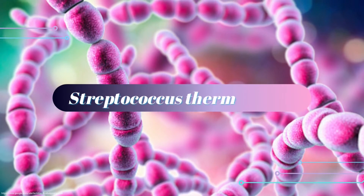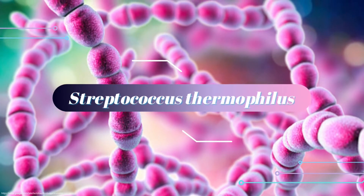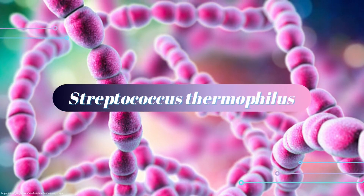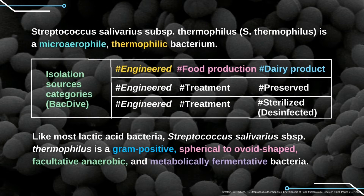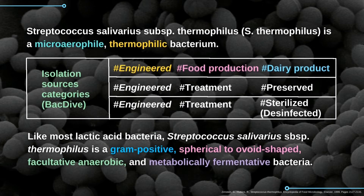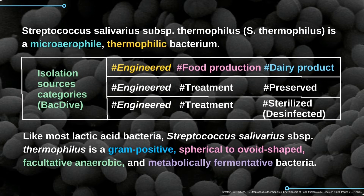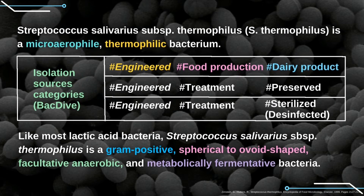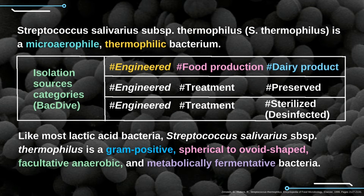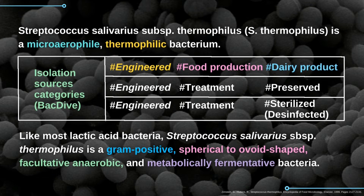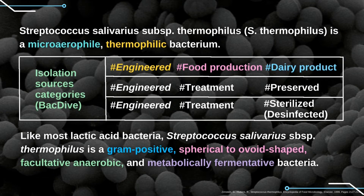Streptococcus thermophilus — formally Streptococcus salivarius subspecies thermophilus — is a microaerophilic, thermophilic bacterium. You can see the isolation source categories of Streptococcus thermophilus in the table.